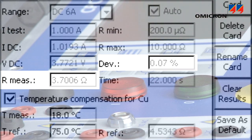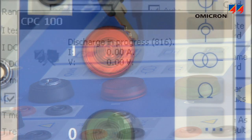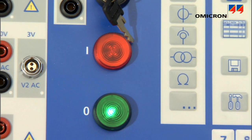After the CPC takes the final measurement, it reduces the test current to zero, discharging the energy stored in the winding. A green safety light will be lit as soon as it is safe to remove the test leads.